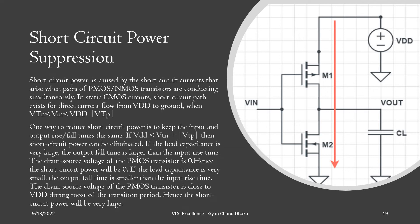Let's see how we can optimize or separate the short circuit power. When the input voltage of an inverter is between the threshold voltage of NMOS and VDD minus the threshold voltage of PMOS, there will be a time where both NMOS and PMOS transistors are on simultaneously.